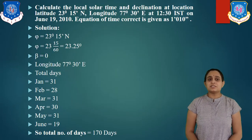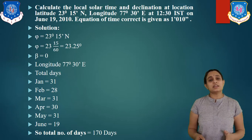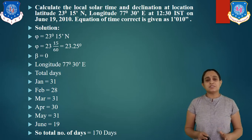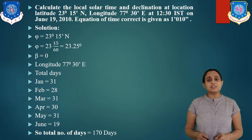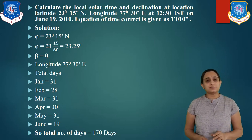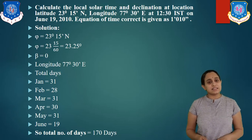Here is the numerical data. Calculate the local solar time and declination angle at location latitude 23 degree 15 minutes north, longitude 77 degree 30 minutes east, at 12:30 IST on June 19, 2010. The equation of time correction is given as 1 minute 10 seconds.